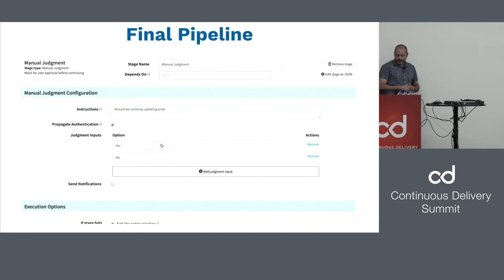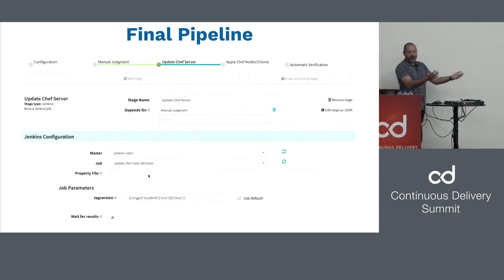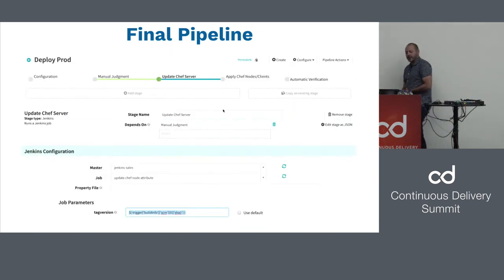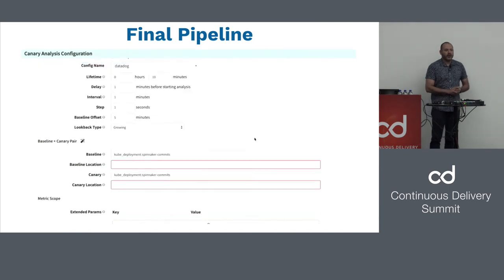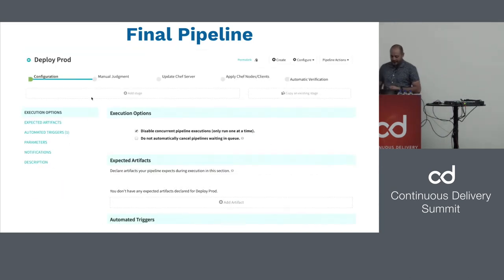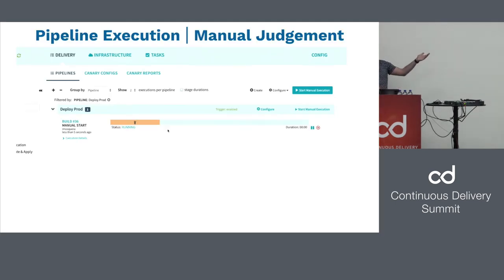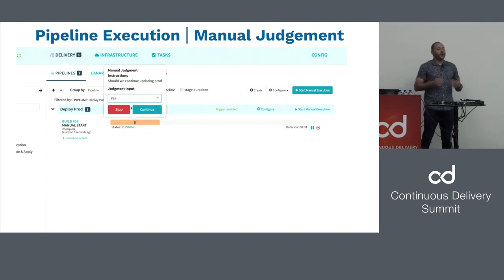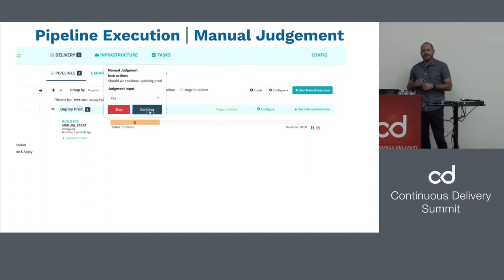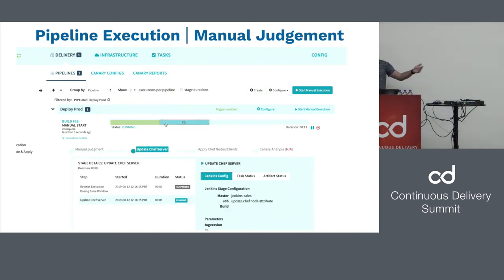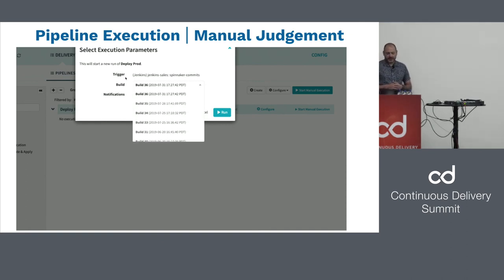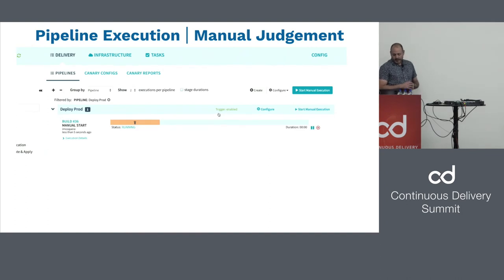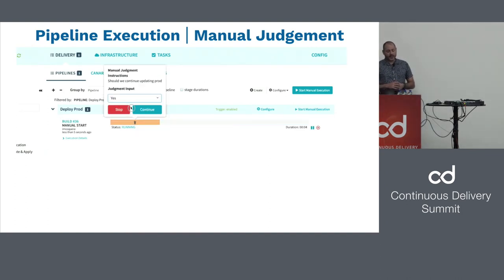Here's our final pipeline. There's a manual judgment, we update our Chef server, call out to Jenkins, then call out to Jenkins again to do the deployment, and after the deployment is done we do automated verification — all using Jenkins and Spinnaker together. When I execute it manually, it asks me for the artifact or the job number from Jenkins I want to run. It kicks off the pipeline, runs, and stops at the manual judgment stage. I go ahead and approve it, picking build number 36, confirm the trigger, the manual judgment comes up, I select yes to continue, and it proceeds. I could have said no and the pipeline would have stopped.